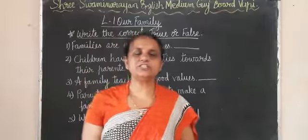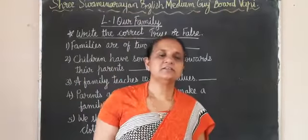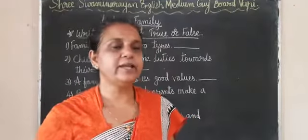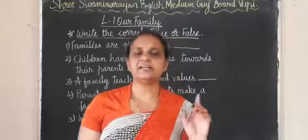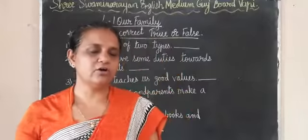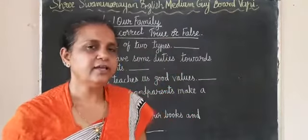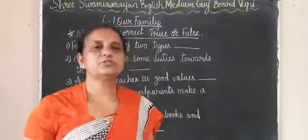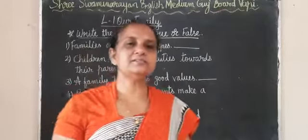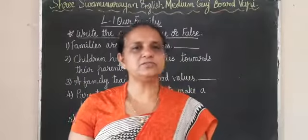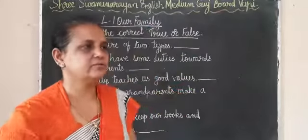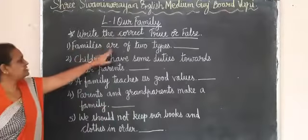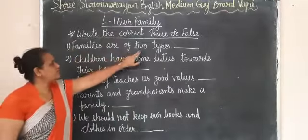Our next question is to put the correct sign — right or wrong. Now we will learn True or False. True means right answer, False means wrong answer. Let's start.